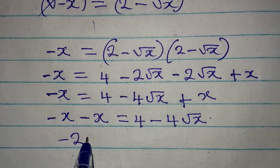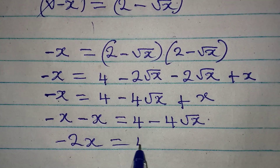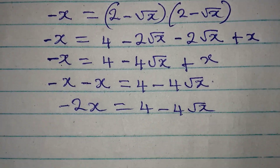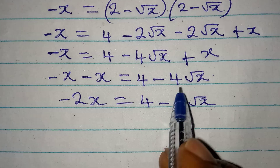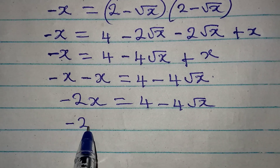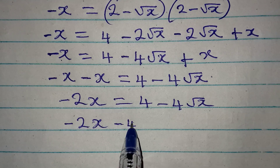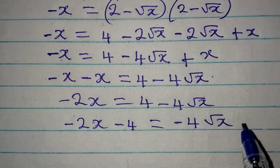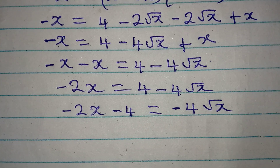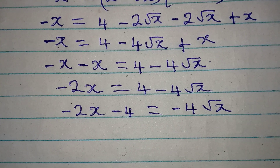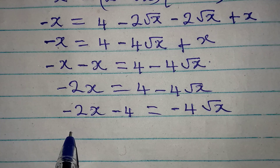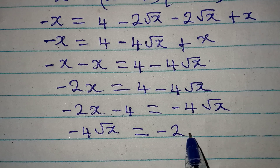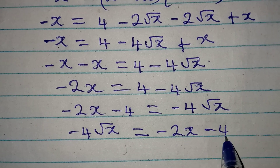Collecting like terms gives us minus 2x equal to 4 minus 4 root x. Now I want to make negative 4 root x the subject, so rearranging: negative 4 root x equals negative 2x minus 4.